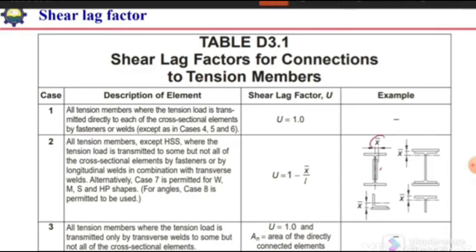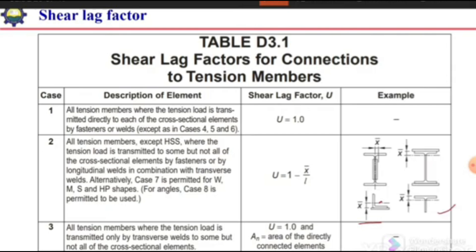Similarly, if instead of the web, the flanges are connected, we convert the W section into two T's and consider them separately. For each T, we determine its centroid and then the distance from the connection surface up to the centroid, which is termed x-bar. For an angle section it is simpler — just determine the centroid and the distance between the load transfer plane and that centroid.